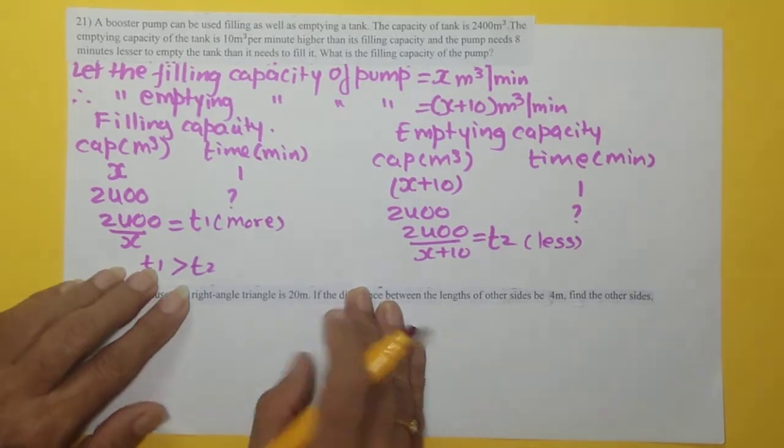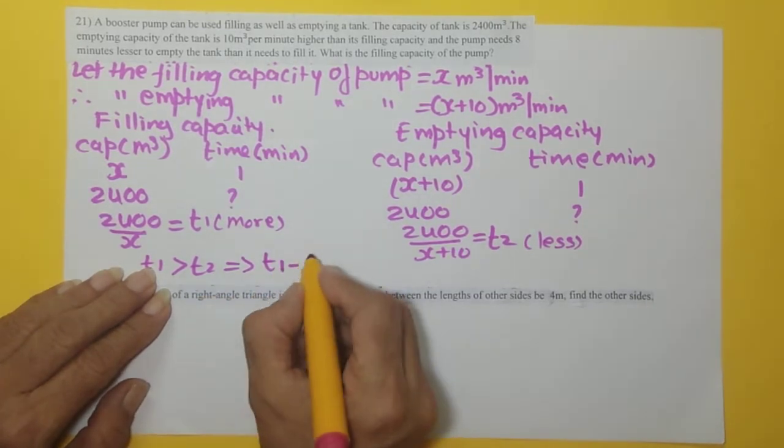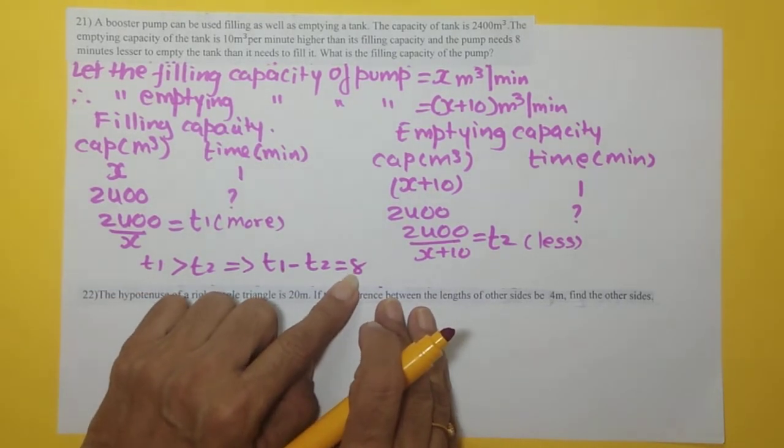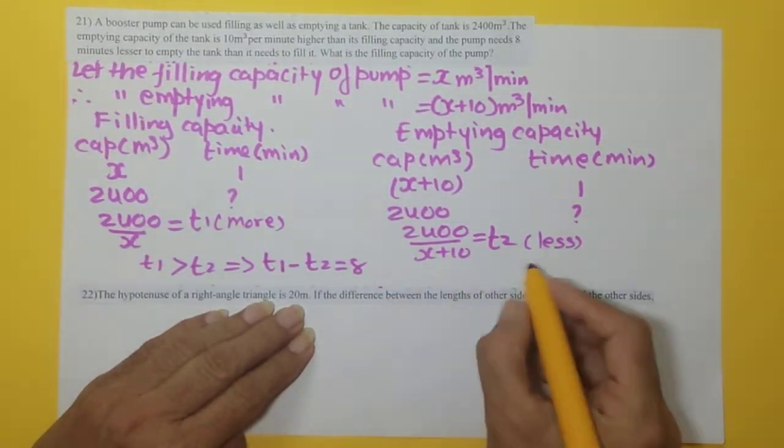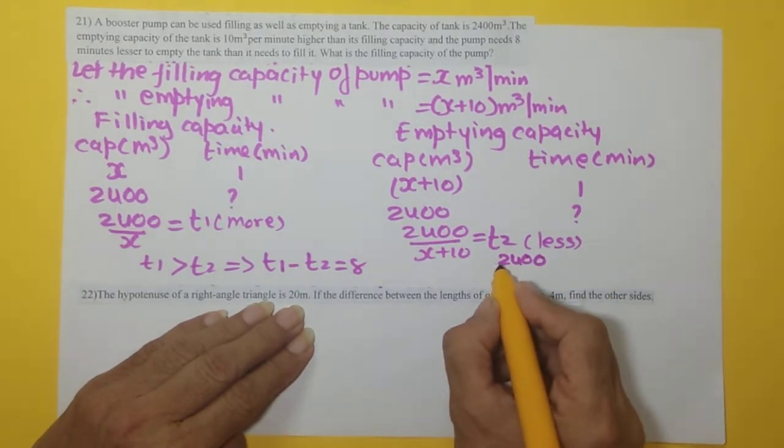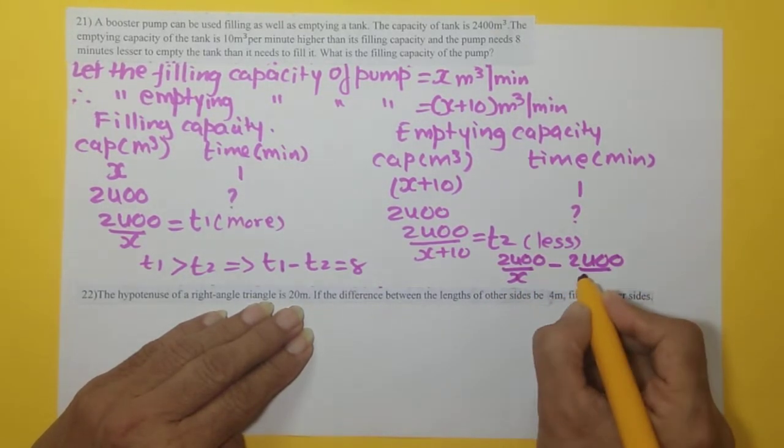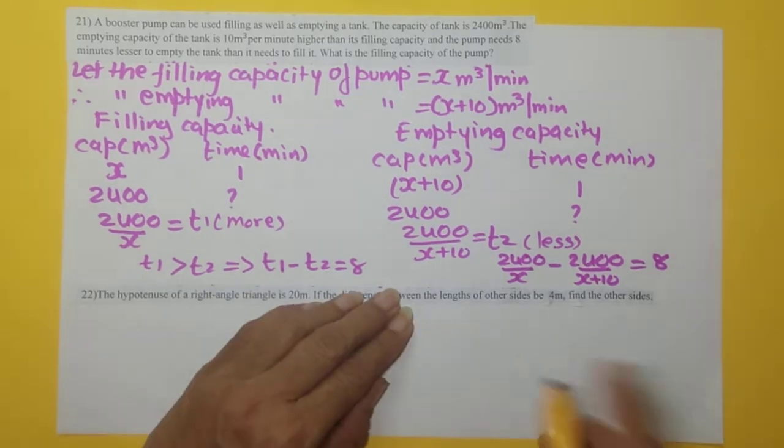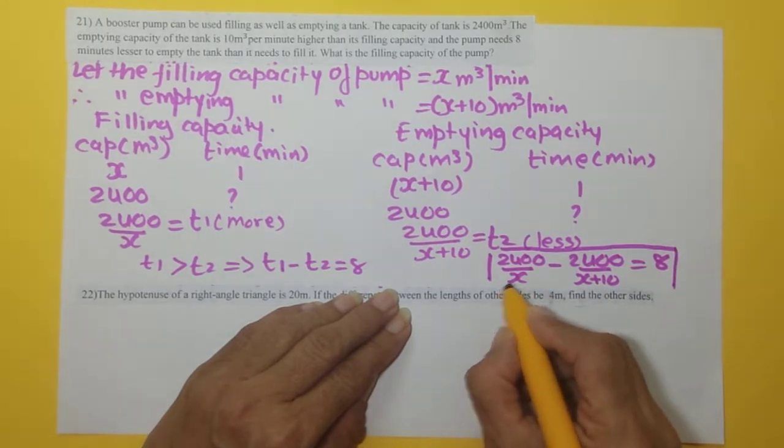So as per that, T1 is greater than T2. Hence, this will give us T1 minus T2 is equal to 8. Here we will keep in terms of minutes only, not in terms of hours, because everywhere we have taken in minutes. Now what will be the equation? The equation will be 2400 upon x minus 2400 upon x plus 10 is equal to 8. So this is how you can form the equation for this sum.